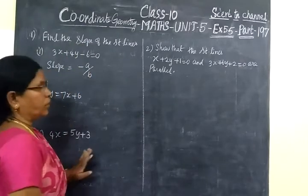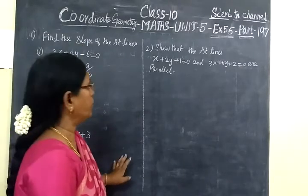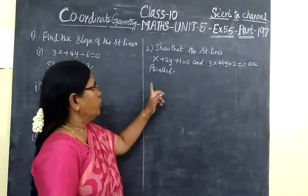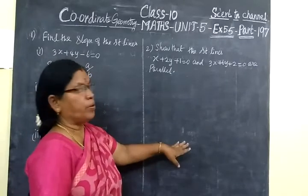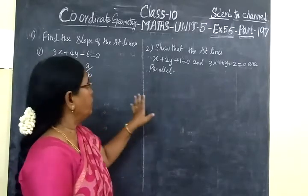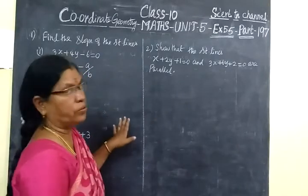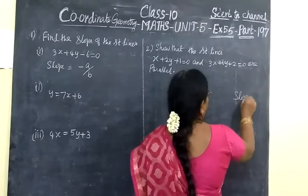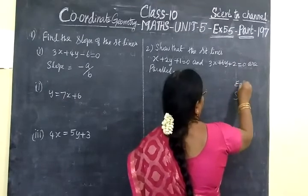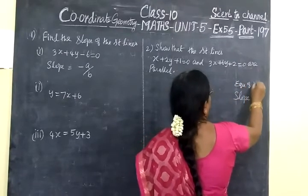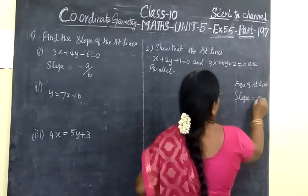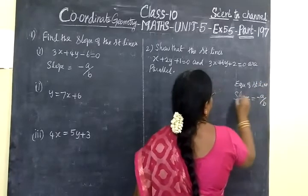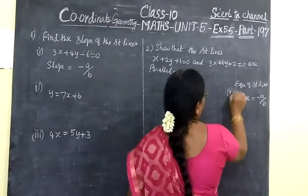We are finding slope. The exercise is full of slope problems. Slope, then parallel and perpendicular. The main condition for the first five questions: slope, and then the equation. Equation of straight line. Given means slope, and then the formula minus a by b. This is important.